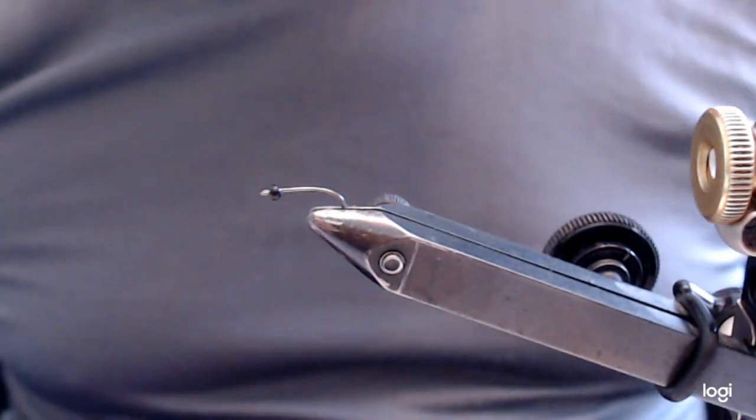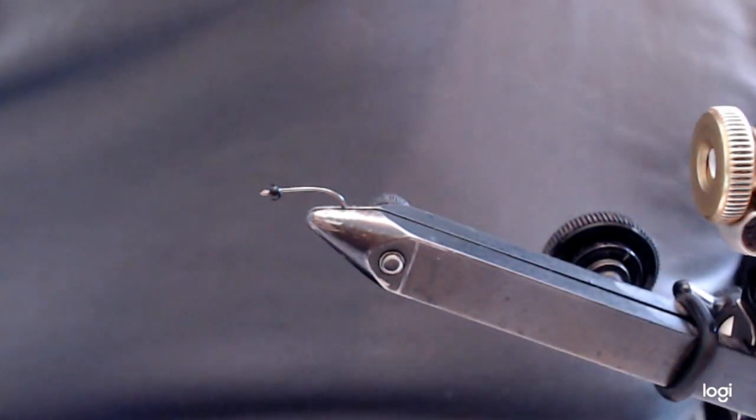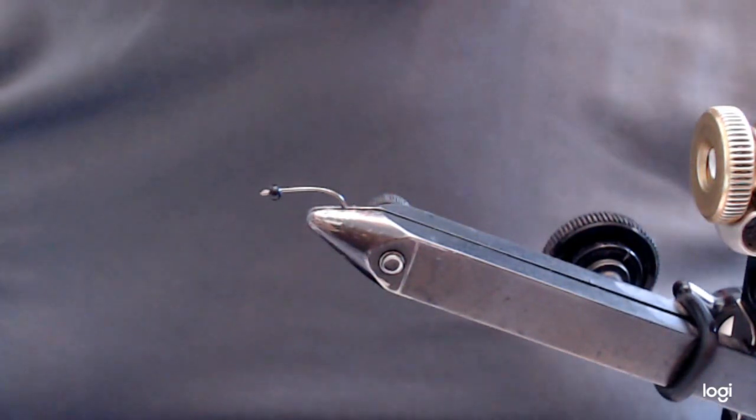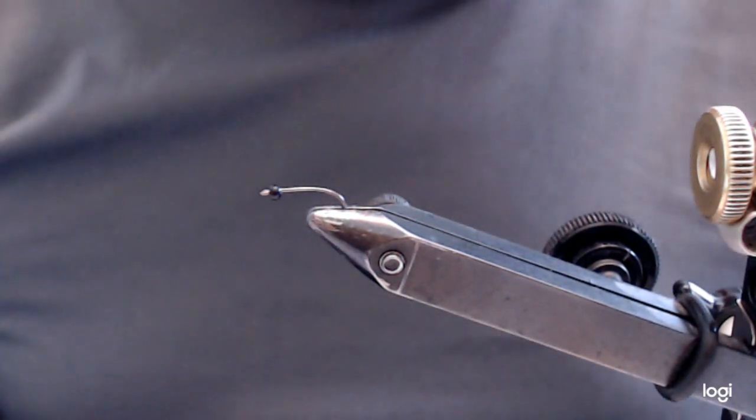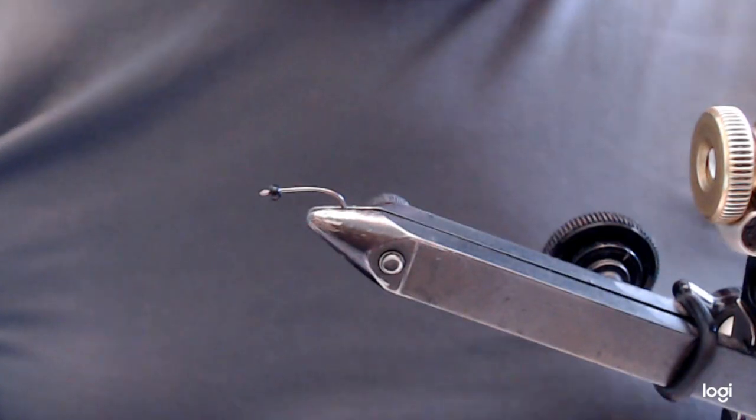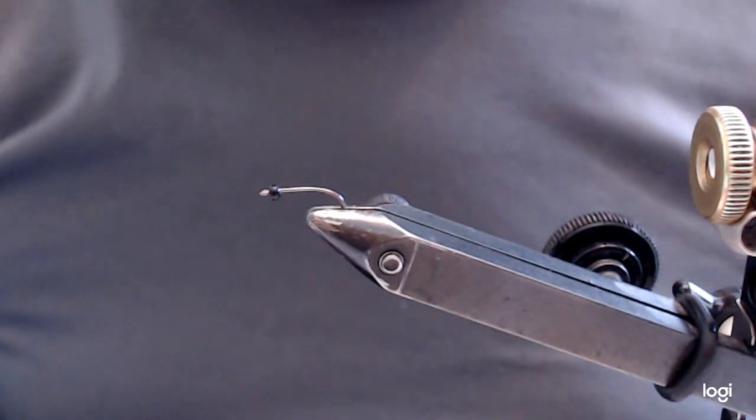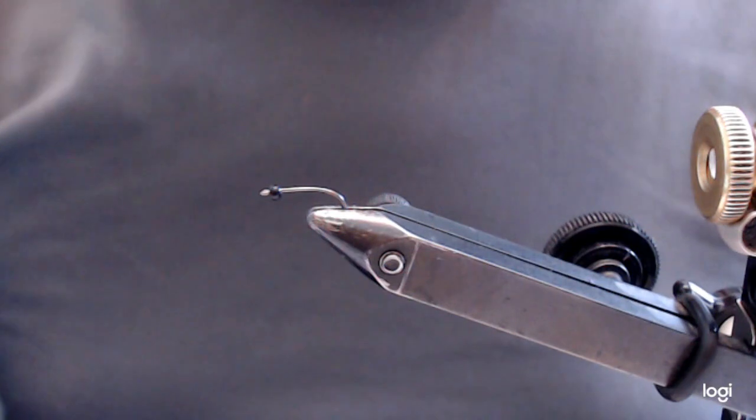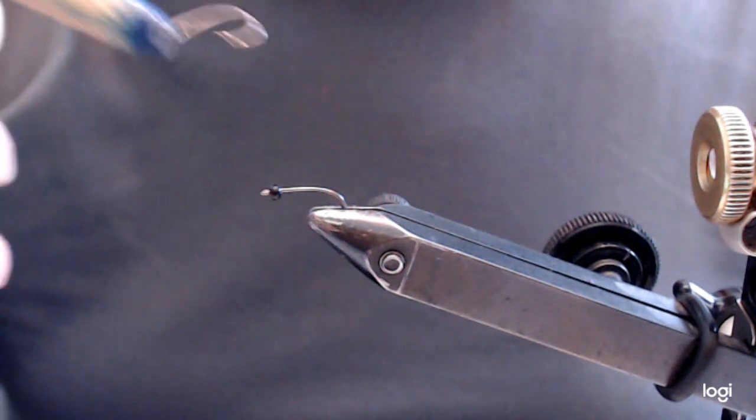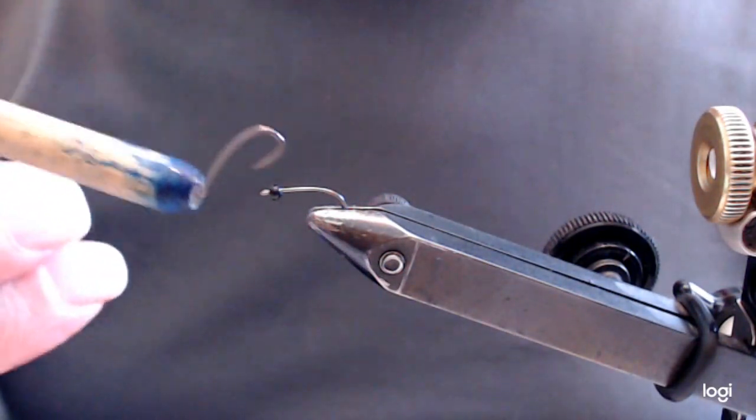Okay, today I'm going to tie a fly that's called an electric lemon. I found out last year that this fly is an absolute must in your box. I'm tying it on a number 16.